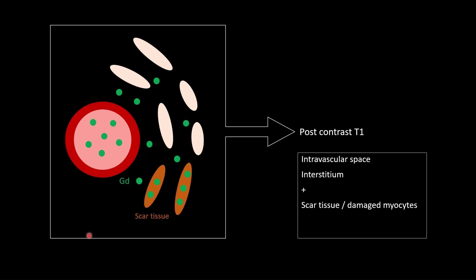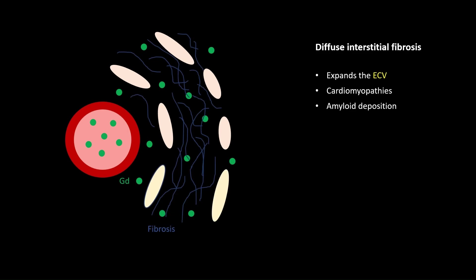This is a post-contrast T1 mapping image. Gadolinium gets deposited in the interstitium and in damaged cells, scar tissue, or fibrosis. So the signal for post-contrast T1 mapping comes from the interstitium and scar tissue.